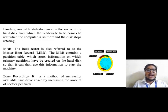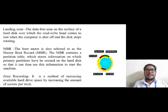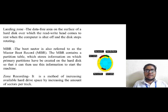The landing zone is the data-free area on the surface of a hard disk drive over which the read/write heads come to rest when the computer is shut off and the disk stops rotating. MBR, also known as the Master Boot Record, contains a partition table which stores information on which primary partitions have been created on the hard disk so it can use that information to start the machine. Zone recording is a method of increasing available hard drive space by increasing the number of sectors per track.